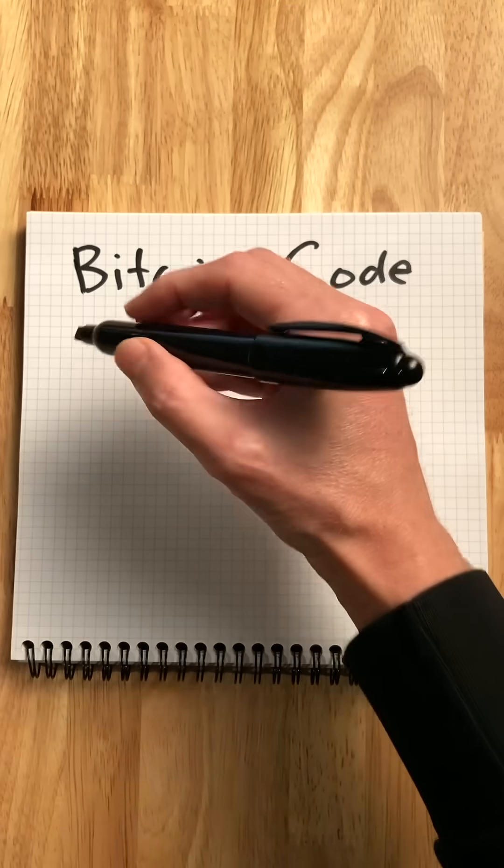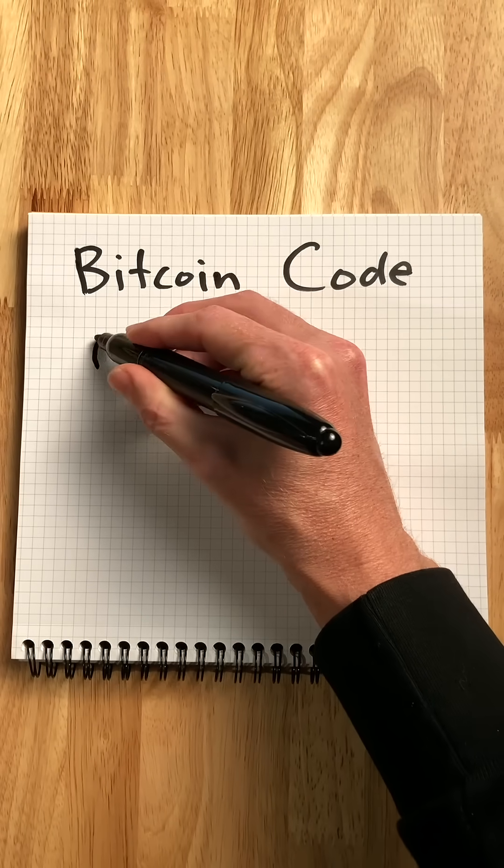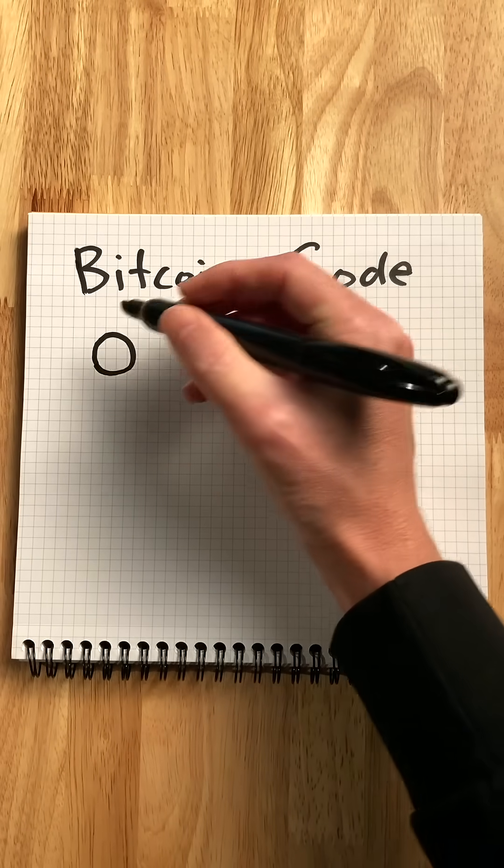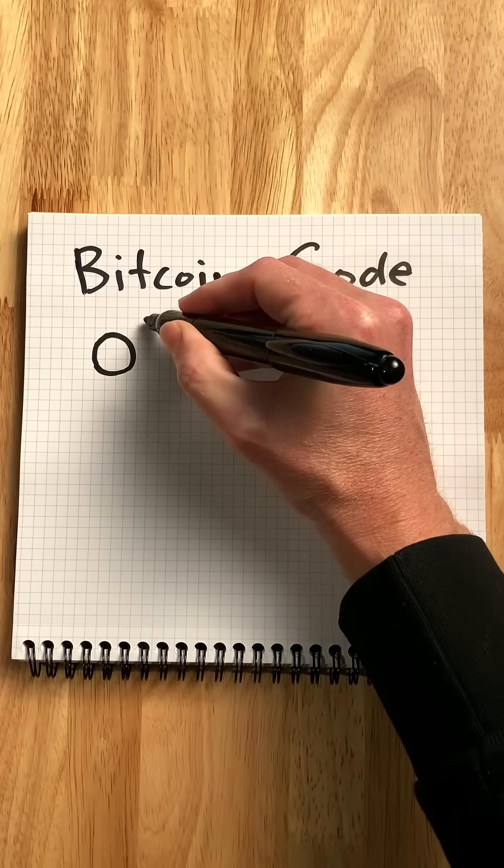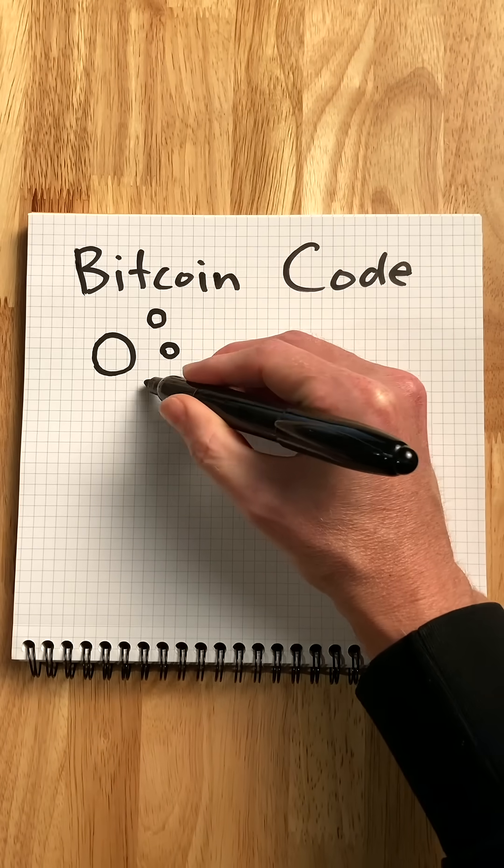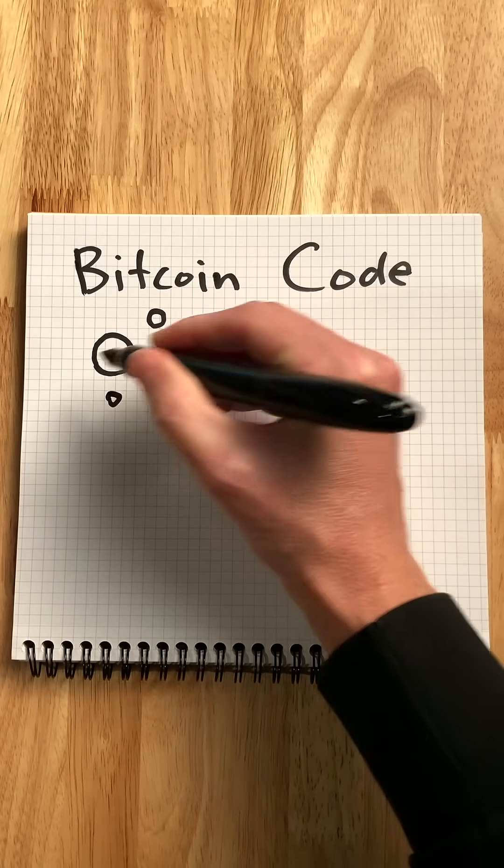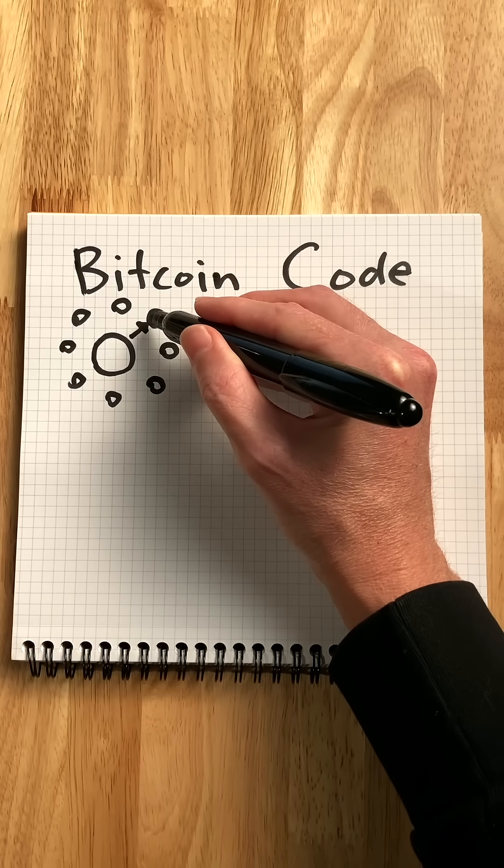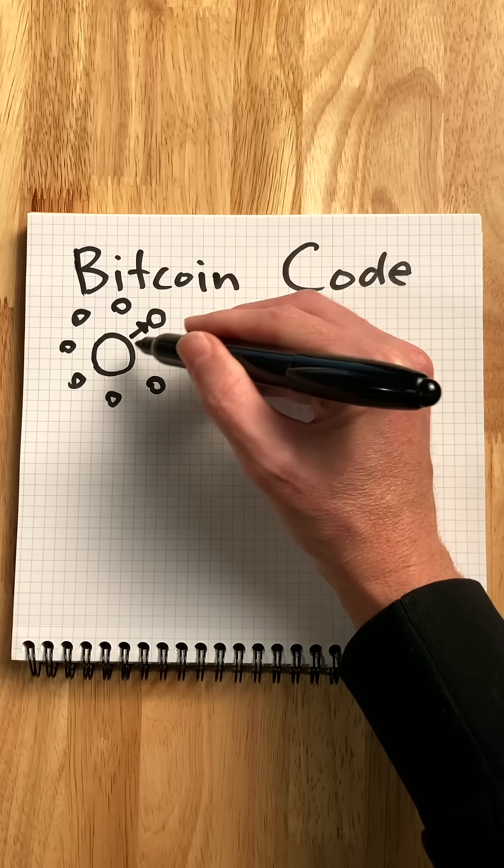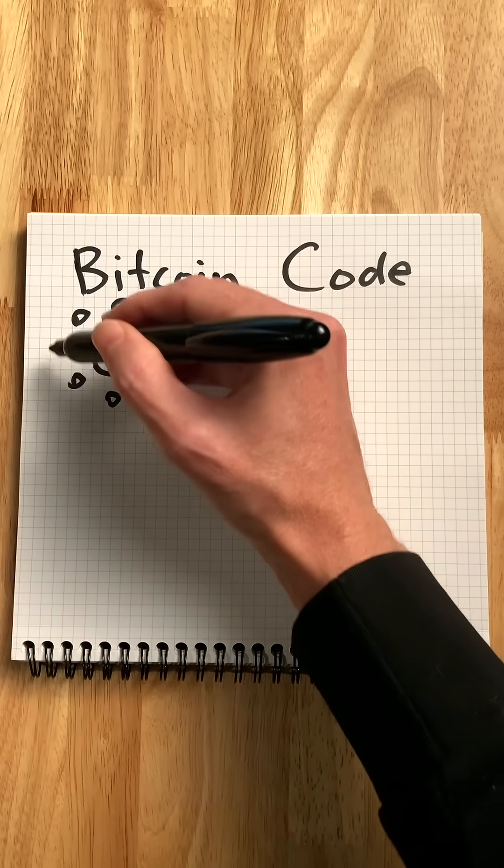Bitcoin is based on open source code, meaning anyone can copy and paste versions of the code base and edit it all they want. Yet those modifications won't change the code base of the Bitcoin network unless everyone adopts those changes.